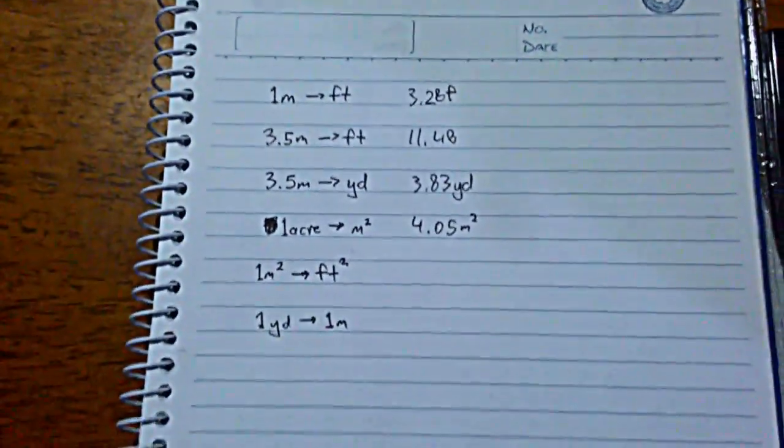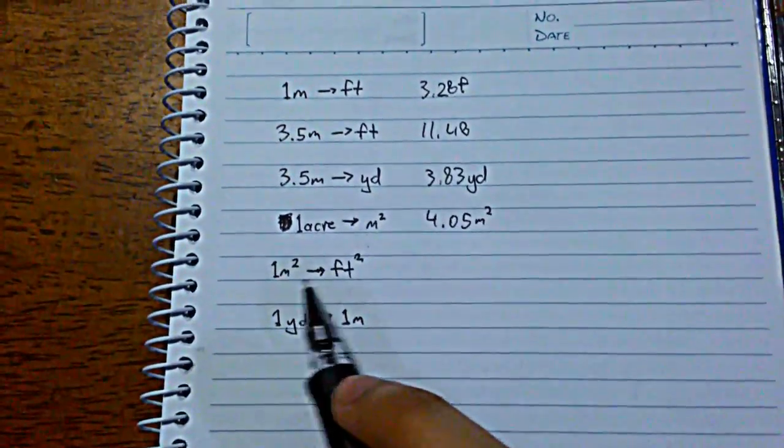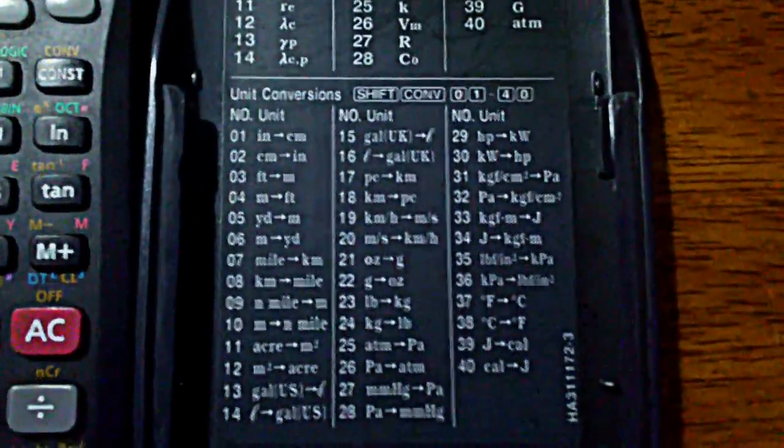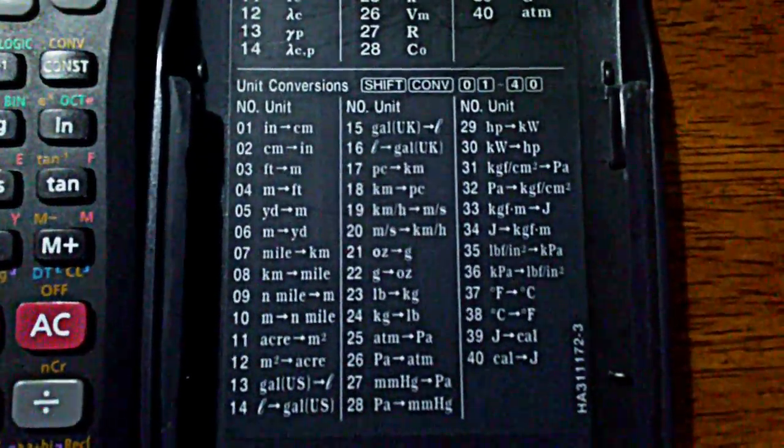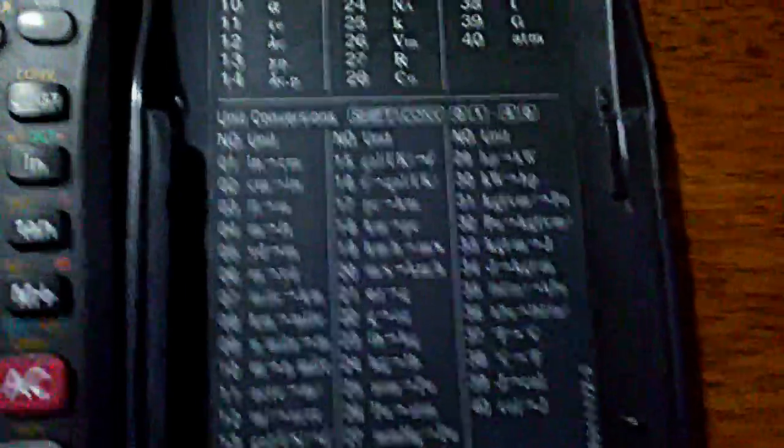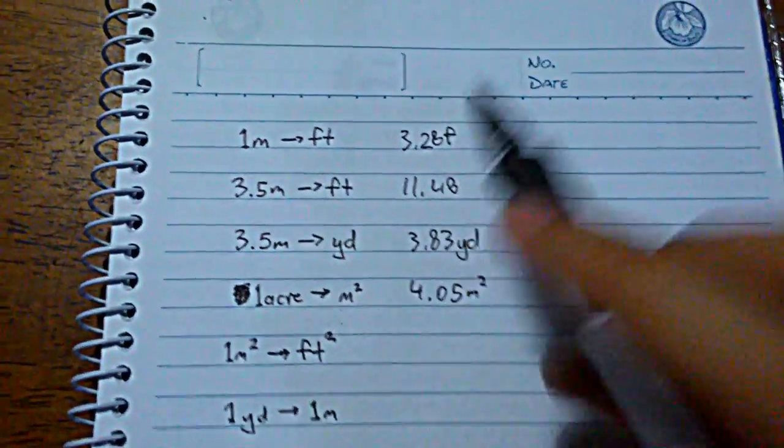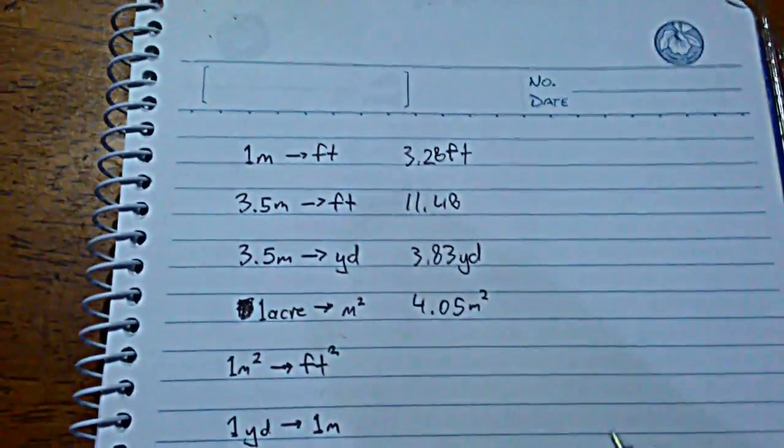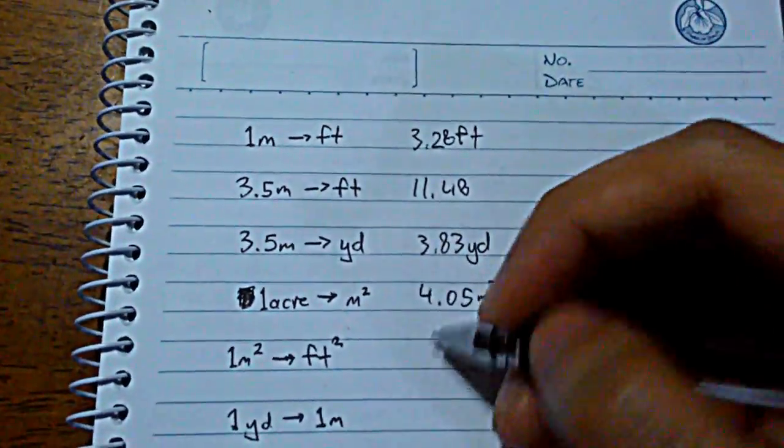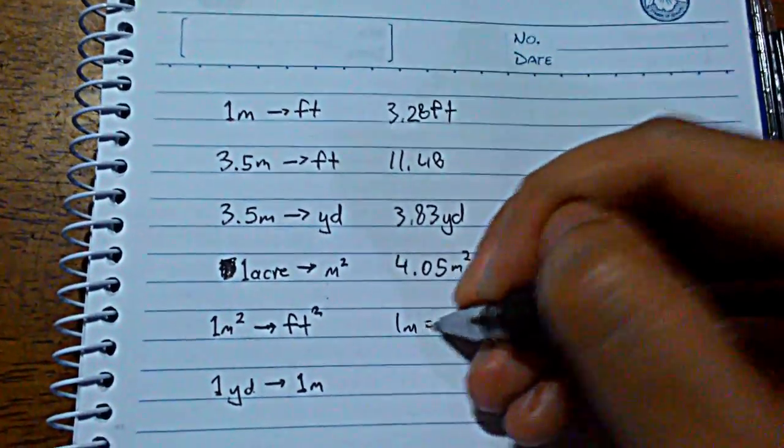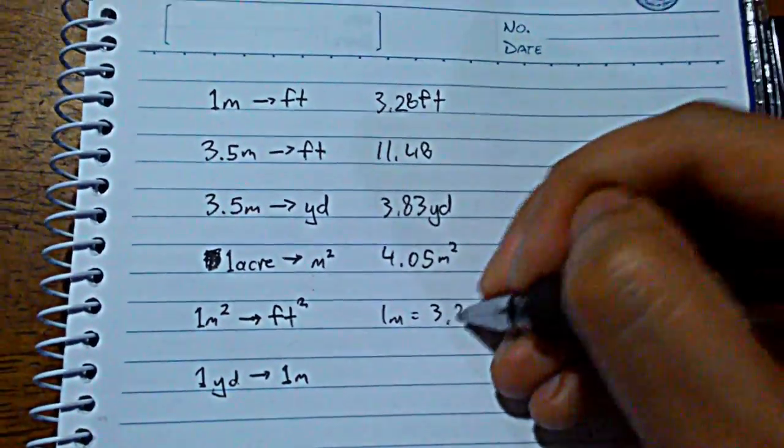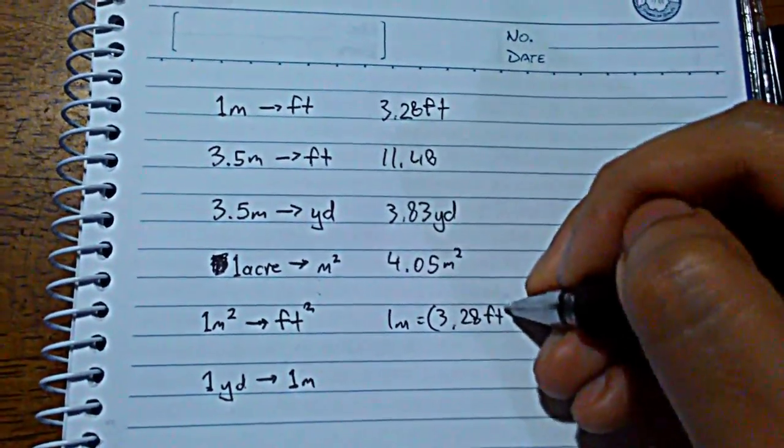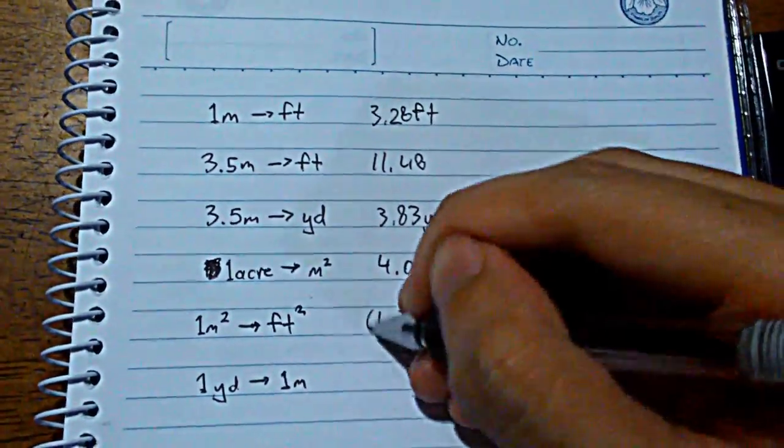Now what if I want to convert area - one square meter into how many square feet? But if I look at my table, we cannot find that particular conversion. What do I do then? Well, we do know that one meter is equal to 3.28 feet. So I just square both sides. So one meter is equal to 3.28 feet, and I just square both sides. So I can reach the area conversion.